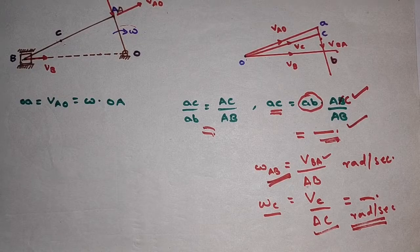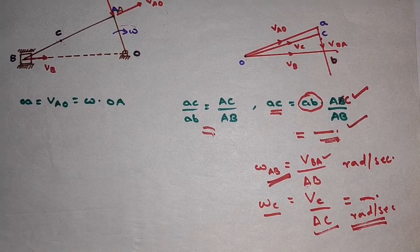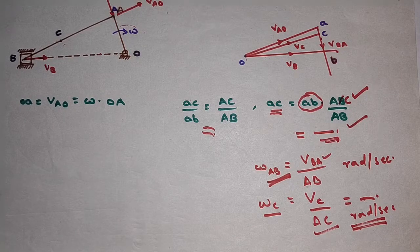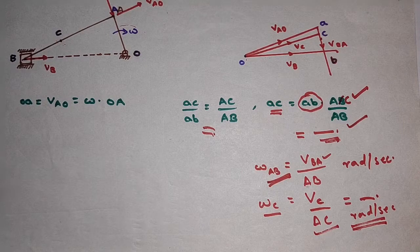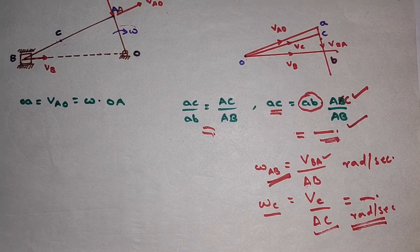This is the basic procedure for determining the angular velocity of the links of a slider crank mechanism using the graphical method. If you have understood the explanation, please like and share this video with your friends.